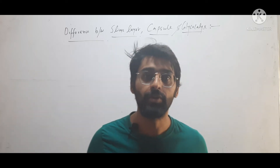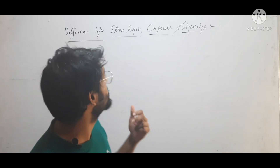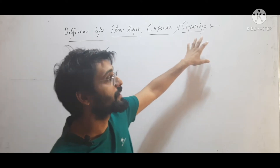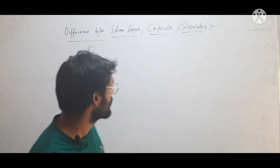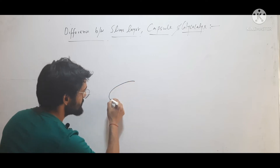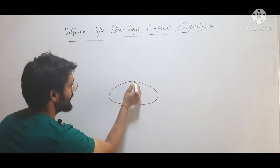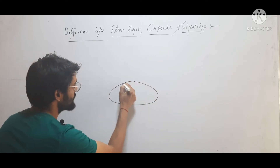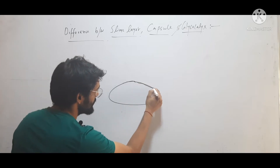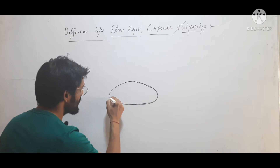Hello friends, in this video we will understand the difference between slime layer, capsule, and glycocalyx. This is a bacteria, and we know that bacteria have a cell wall that is made up of peptidoglycan.